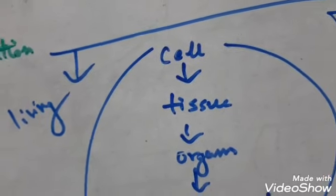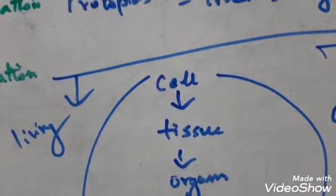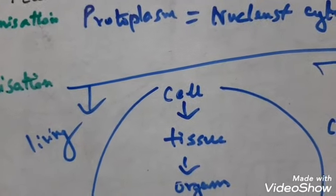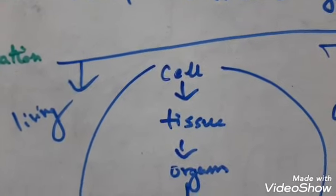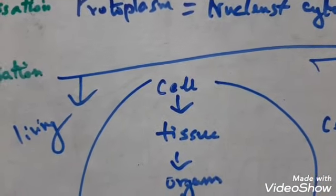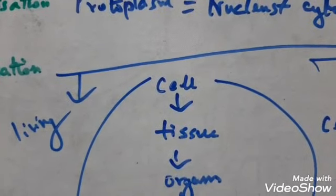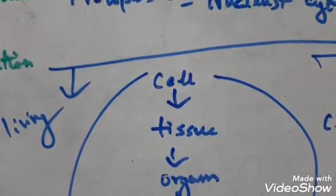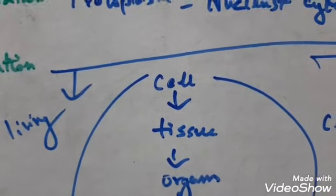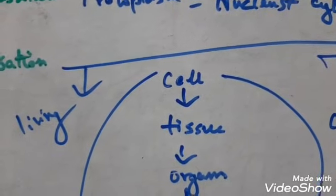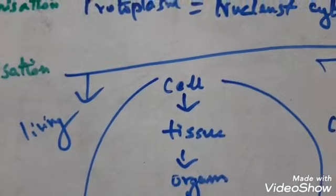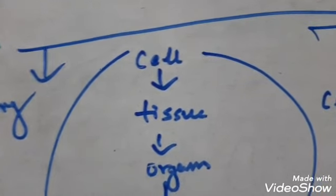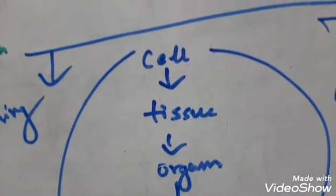The properties of a tissue are not simply the properties of its constituent cells. For example, osteocyte cells form bone tissue, but an individual osteocyte cell does not have the same hardness and structural property as the tissue bone. These emergent properties arise as a result of interactions among the constituent cells. This interaction between various components of the body results in the hierarchy of organisms.